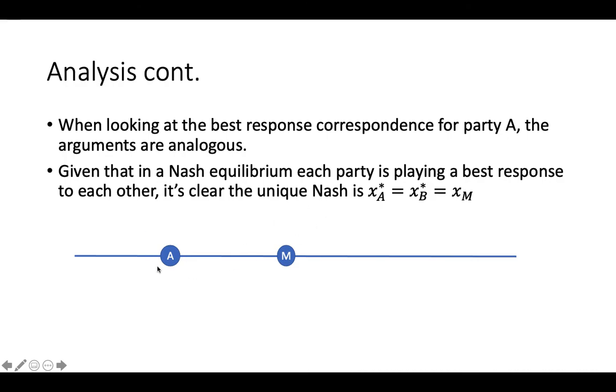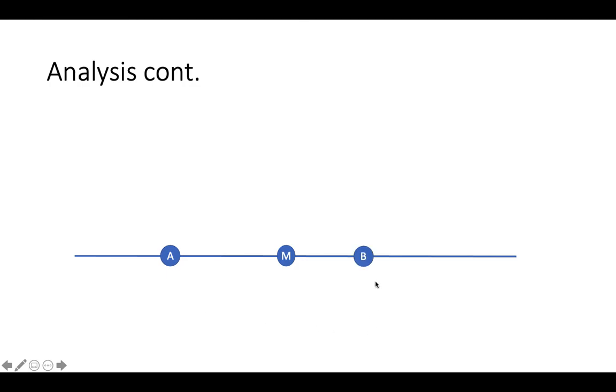So you could talk through this formally, but I'm just going to show on our little line here how that would work. So let's say B thinks A is going to play something down here. Then they would always win by playing this, but A knows then that it wouldn't be a good idea because they would lose to B, so then they would play something closer. And then B knows that A is smart enough to do that, so they would move closer. And then so on and so on until you get to where they are all playing the median. And that is going to be the unique Nash equilibria.